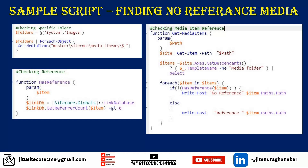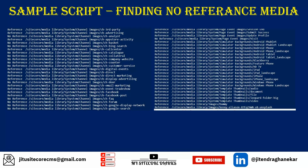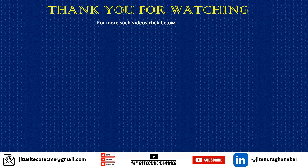This sample script is useful when you have a bulk of items and cannot check each one manually. When you execute it, the result will show which items have references and which don't. This is a complete sample script for finding whether media items have references or not.